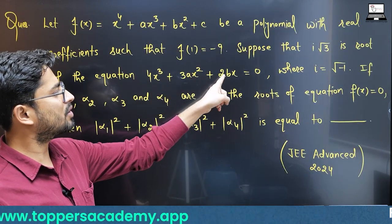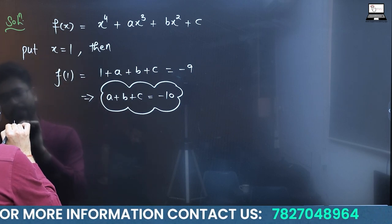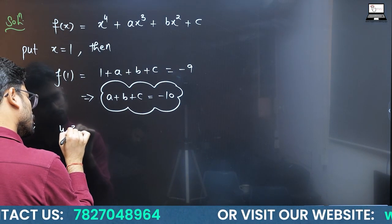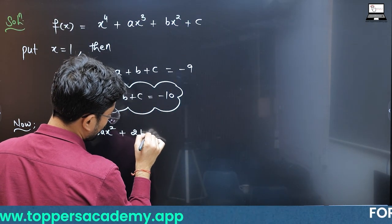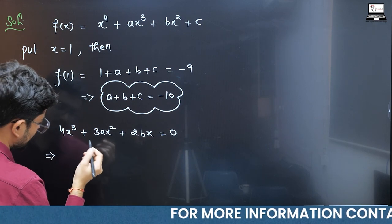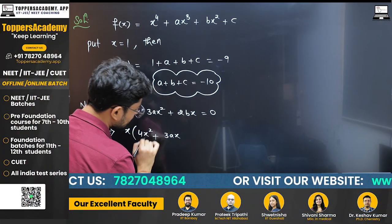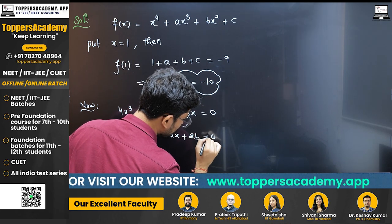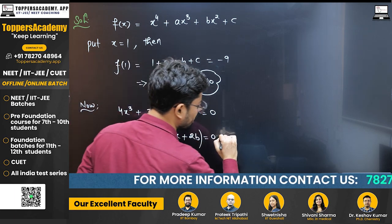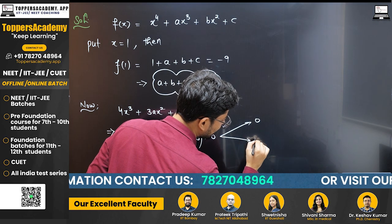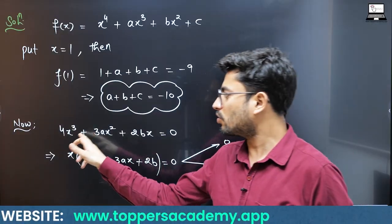Now consider f'(x): 4x³ + 3ax² + 2bx = 0, which has iota root 3 as a root. Taking x common, we get x(4x² + 3ax + 2b) = 0. So clearly one root is 0, and a second root is iota root 3.